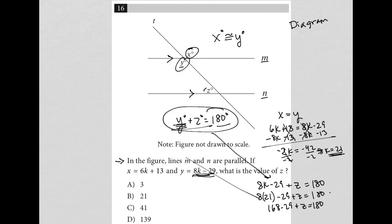So I have 139 plus z equals 180. I subtract 139 from both sides, and I end up with z equals 41. Therefore, the correct answer is choice C.